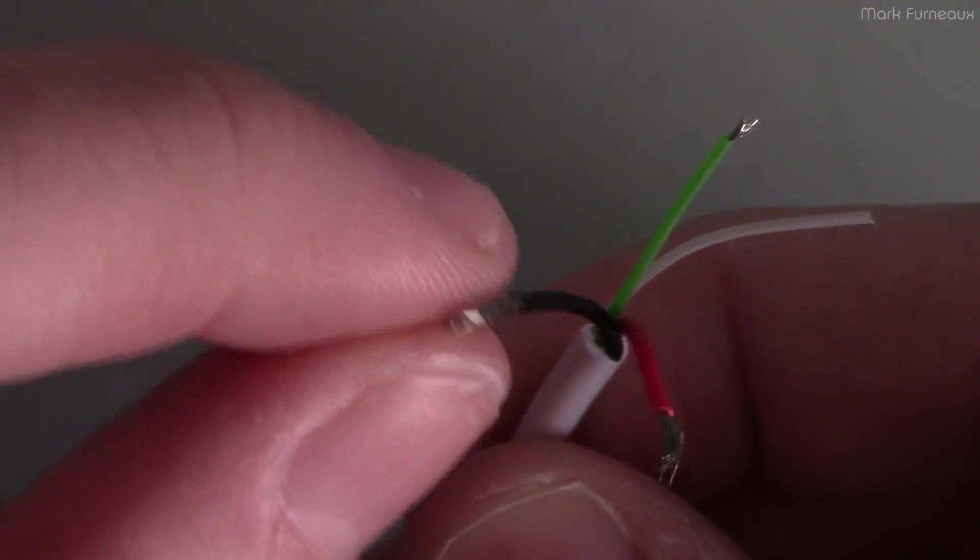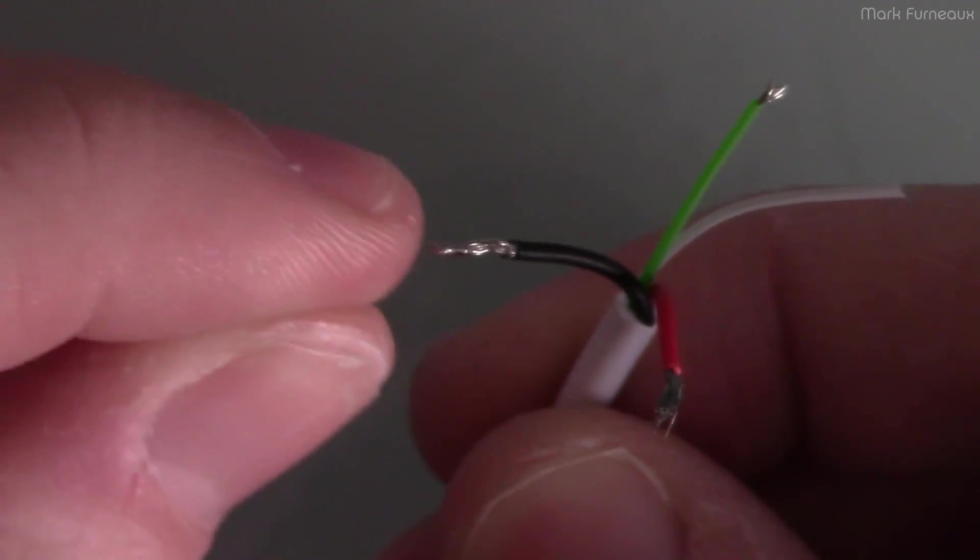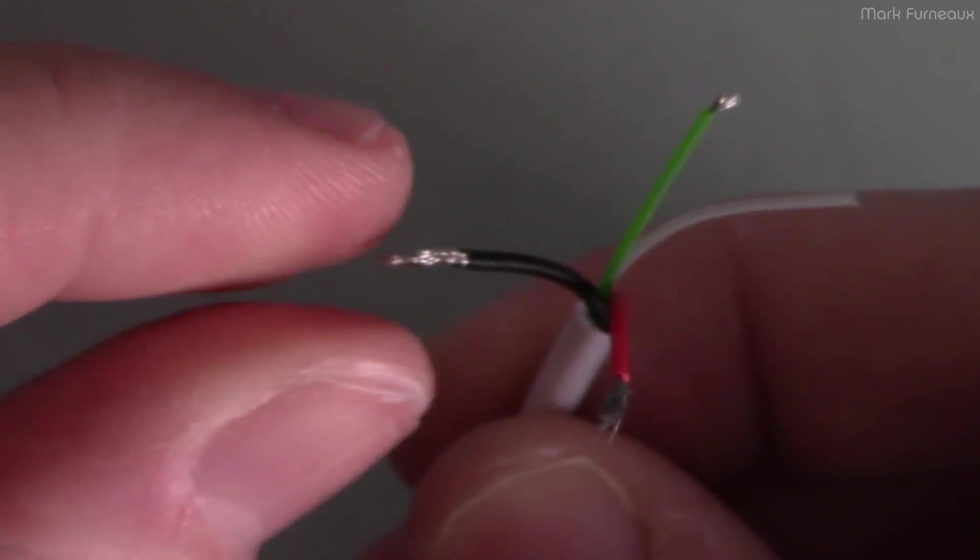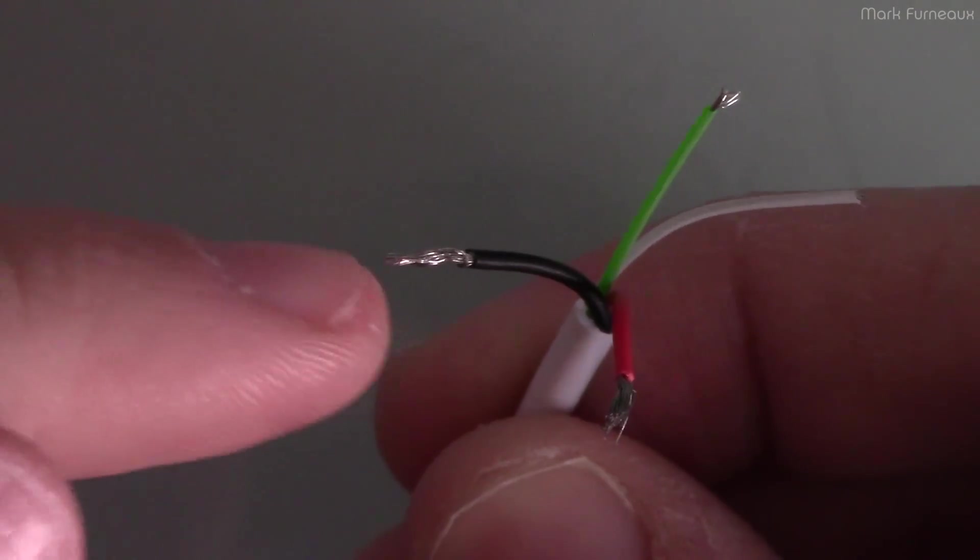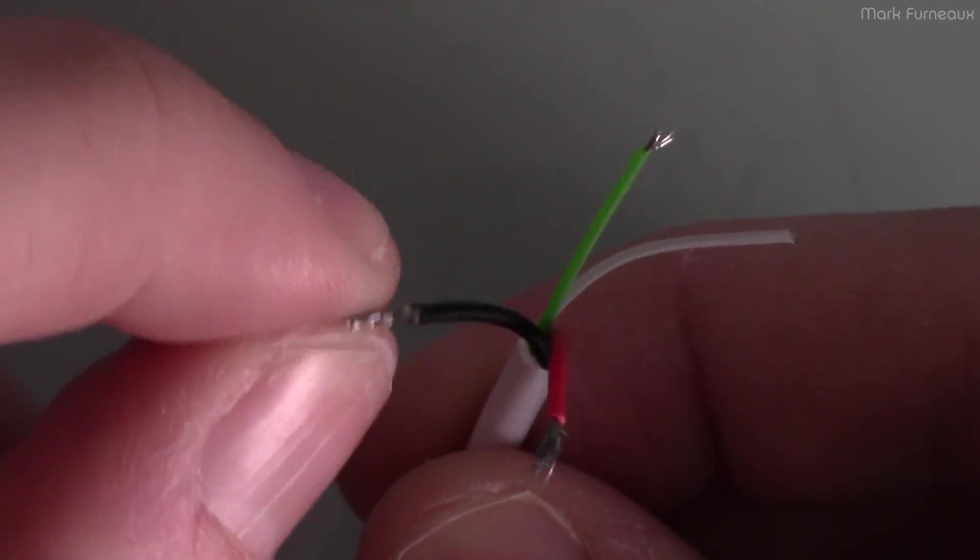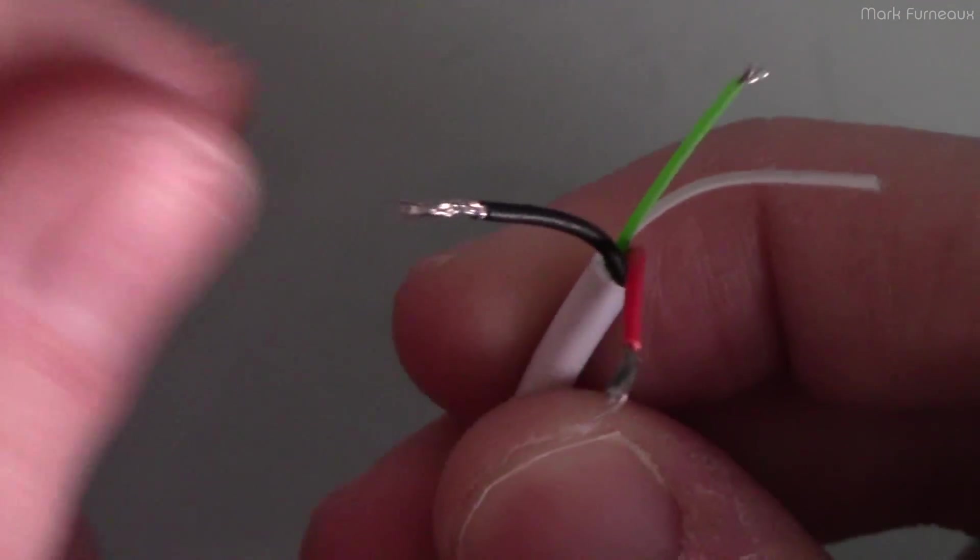And the reason that they do that is because due to the skin effect, most of the electrons are flowing on the outsides of the actual wire. And so if you put copper there, it can increase the performance. And it also allows you to solder it a little easier because it's, of course, coated in copper. So it's something interesting to see.